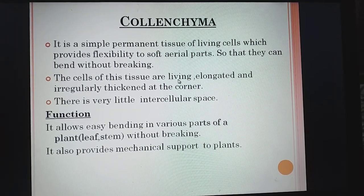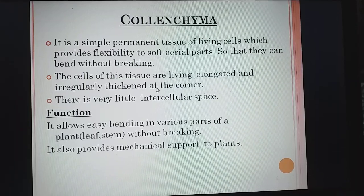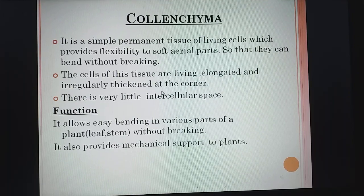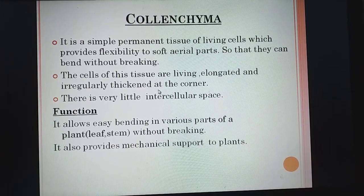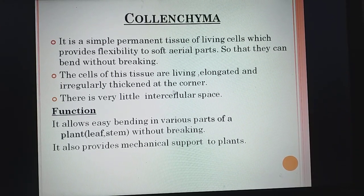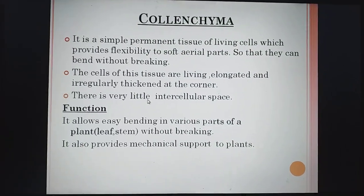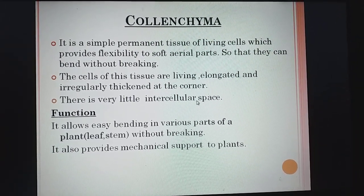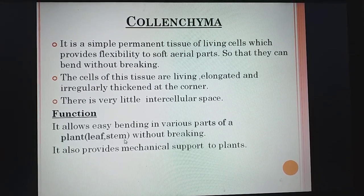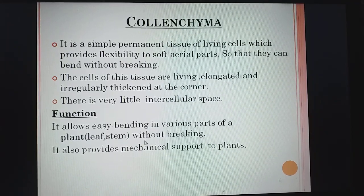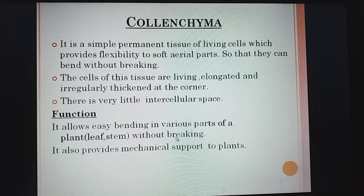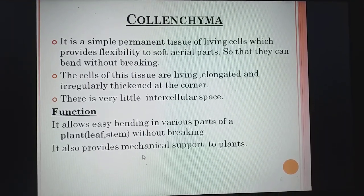The cells of colenchyma are living, elongated, and irregularly thickened at the corners. In parenchyma, cells were not thickened, so there was large intercellular space. But here, as the corners are thickened, intercellular space is very little. Its function: it allows easy bending in various parts of the plant like leaf and stem so they bend without breaking. It also provides mechanical support to the plant.